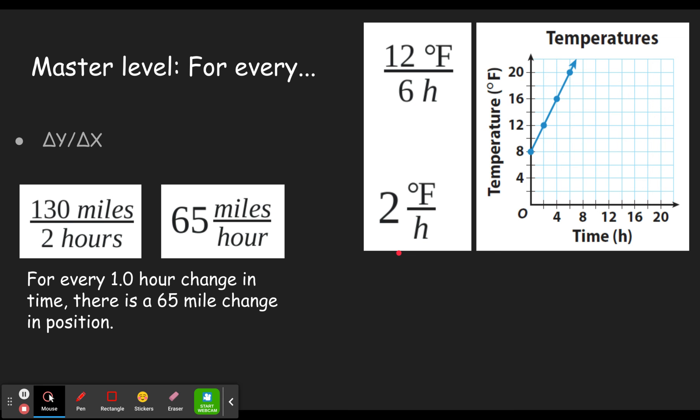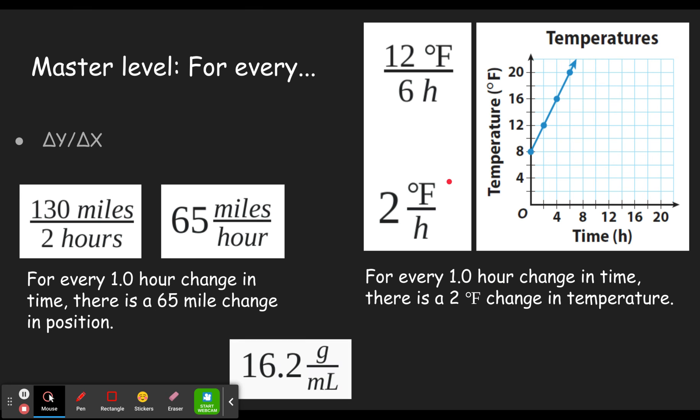So 12 degrees Fahrenheit in 6 hours gives us 2 degrees Fahrenheit per hour, which means for every, and then we take the denominator, 1 hour, there is a 2 degree Fahrenheit change in temperature. Because degrees Fahrenheit is changing temperature. So once again, the 1 hour comes from the denominator, the 2 degrees Fahrenheit comes from the numerator.